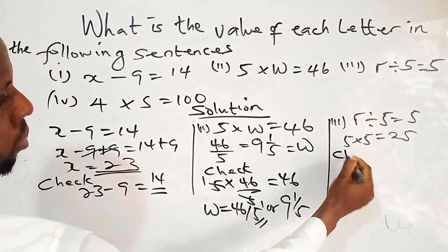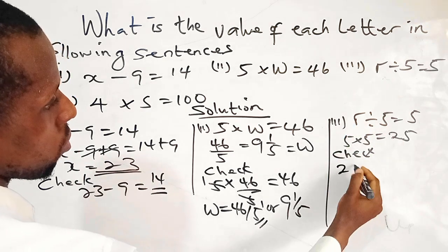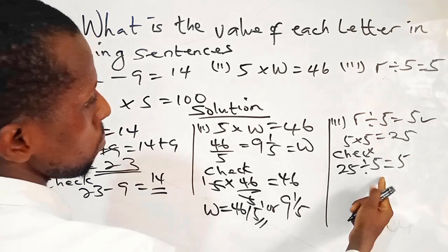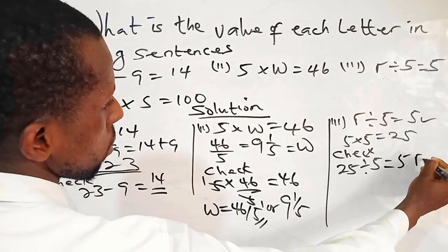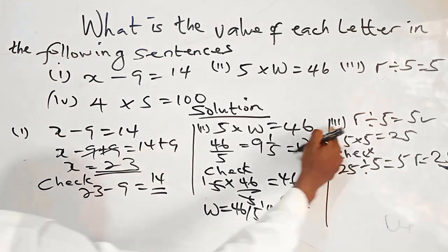Okay, by the time we check it, let's replace R with 25. So we have 25 divided by 5. It will give us 5. So that means R equals 25.